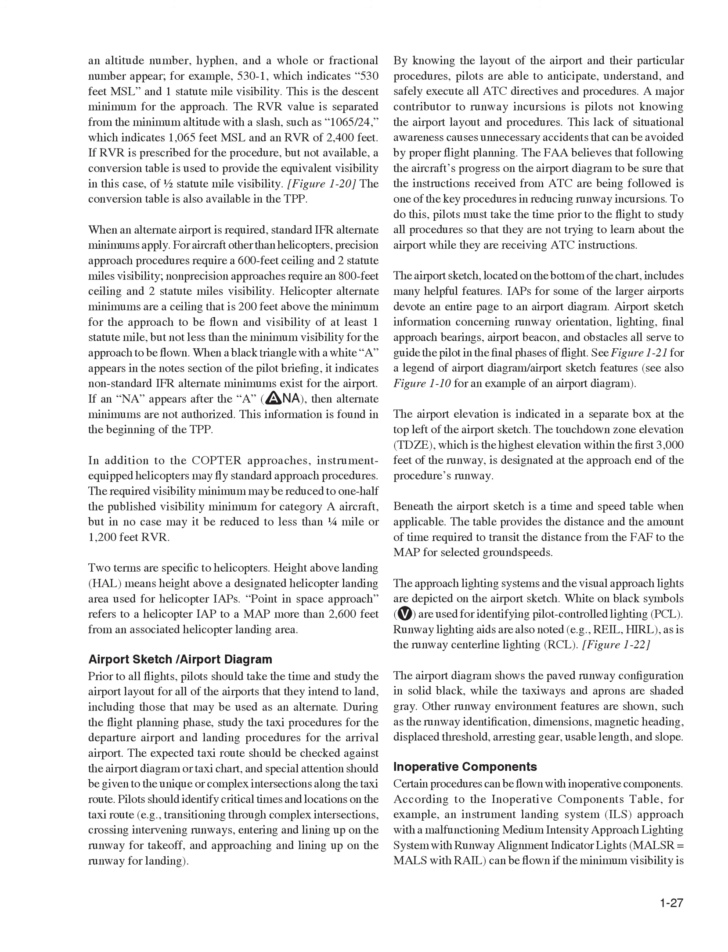The FAA believes that following the aircraft's progress on the airport diagram to ensure ATC instructions are being followed is one of the key procedures in reducing runway incursions. Pilots must take the time prior to the flight to study all procedures so that they are not trying to learn about the airport while receiving ATC instructions. The airport sketch, located on the bottom of the chart, includes many helpful features. IAPs for some of the larger airports devote an entire page to an airport diagram. Airport sketch information concerning runway orientation, lighting, final approach bearings, airport beacon, and obstacles all serve to guide the pilot in the final phases of flight.